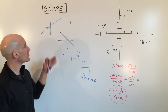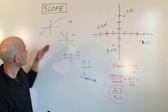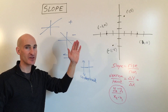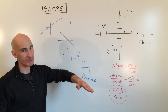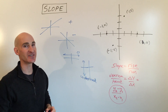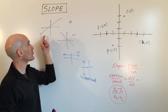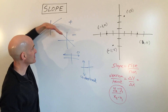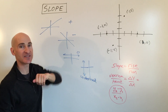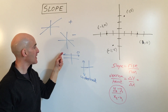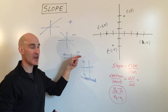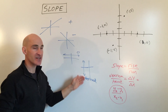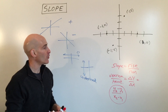Slope is basically the inclination of a line — how steep or non-steep it is. It can be positive, meaning the line goes up to the right and is increasing, or negative, meaning it goes down to the right and is decreasing. A zero slope is a horizontal line, and a vertical line has an undefined slope.